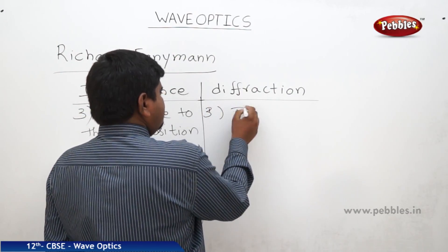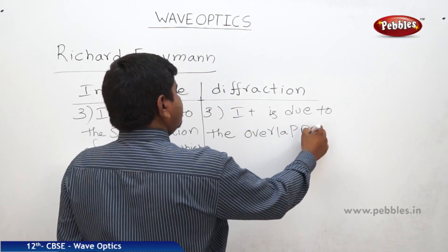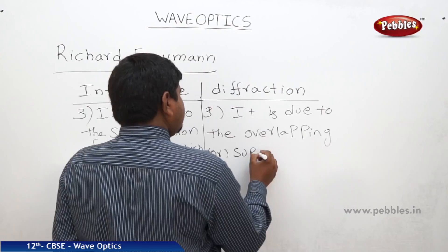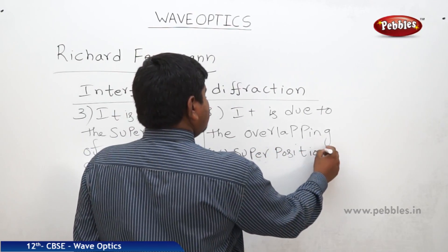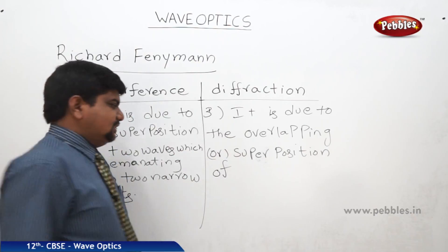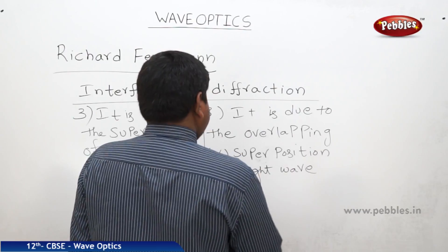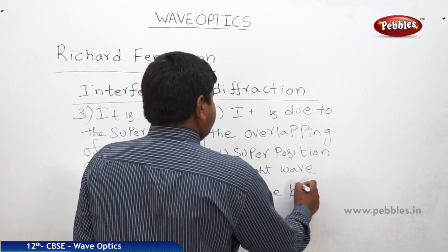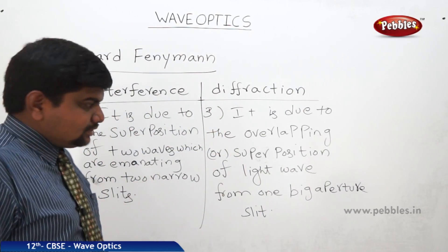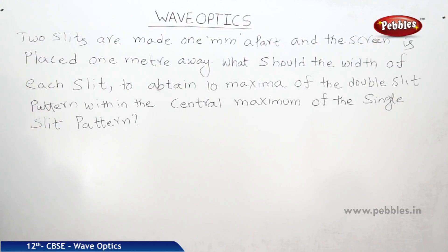Diffraction is due to the overlapping or superposition of a light wave from 1 narrow slit or 1 big slit — a slit of big aperture. These are the main differences between interference and diffraction pattern. There is one problem with respect to the diffraction pattern: two slits are made 1 millimeter apart and the screen is placed 1 meter away. This problem was originally for interference but changed to diffraction.